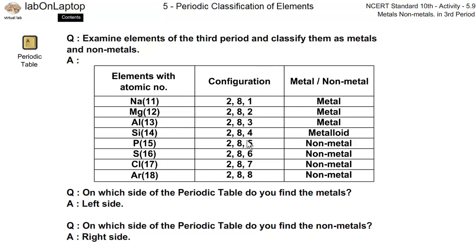This is the configuration. This is silicon. Because the material is kind of a semiconductor, we call it the metalloid. It means that it is not metal and non-metal. This is why it is the metalloid.